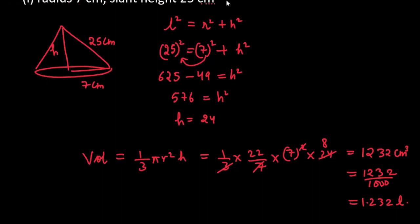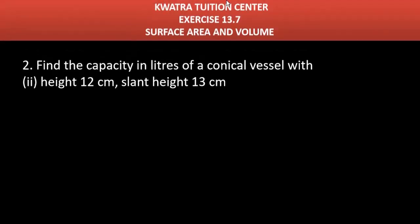Second part mein bhi aap ko, I think, height diya hua hai aur slant height diya hua hai. Okay, to slant height se aur height se. How can we get radius? To, we get radius, which we apply, slant height is 13, height is 12. To, what is our formula?